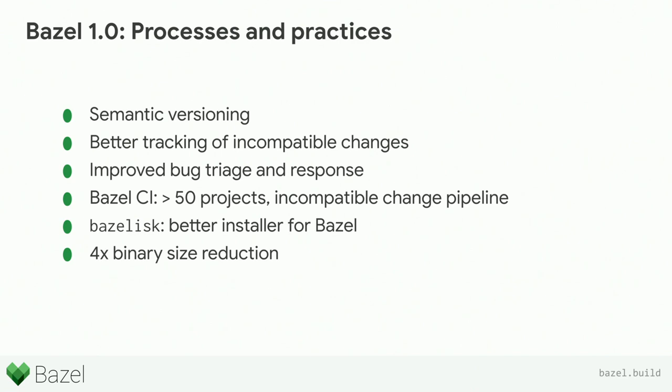We've introduced what we call the incompatible change policy. We want to give folks advance notice of breaking changes under special stylized flags. You have the opportunity to test these changes in advance, and then at the next release, after a three-month or so period, we will flip those flags — but you've had fair warning to get on board. We've also improved our bug triage and response internally. We're trying to be more responsive and more systematic in our response policy.